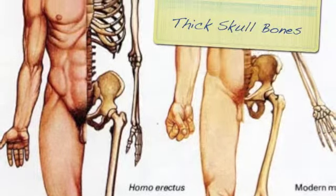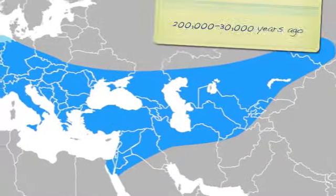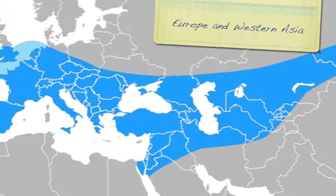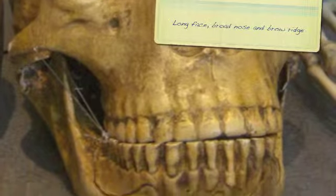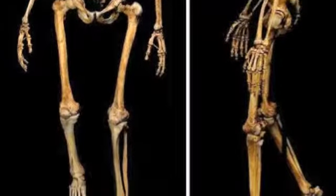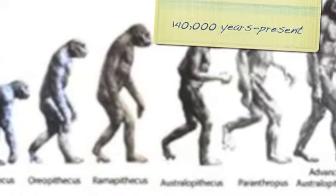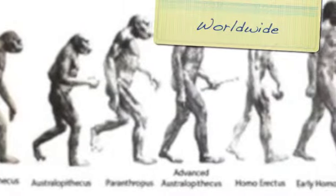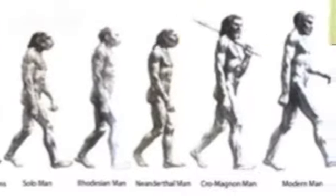Homo erectus is also suspected to have used fire and rudimentary language. Homo neanderthalensis lived 200,000 to 300,000 years ago in Europe and Western Asia, with a skull capacity of 1,500 cubic centimeters. It had a long narrow face with a broad nose and brow ridge, was known as a cave dweller, buried its dead, and used flint flake tools. This brings us to Homo sapiens, or modern humans, who appeared about 140,000 years ago. Our brain capacity is about 1,440 cubic centimeters; we have a flatter face, pointed jaw, reduced orbital ridges, and our species is known for cave painting and primitive religion.